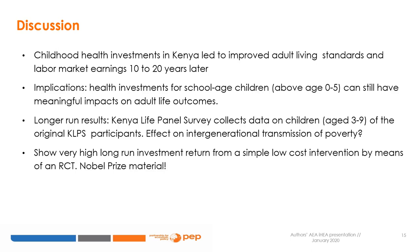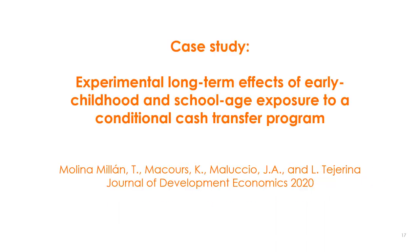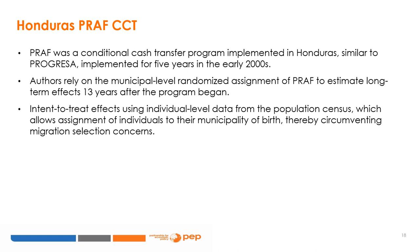We can also derive lessons for long-run RCTs from cash transfer programs. We start in Honduras with a paper called 'Experimental Long-Term Effects of Early Childhood and School-Age Exposure to a Conditional Cash Transfer Program' by Molina Milan and co-authors, published in the Journal of Development Economics in 2020. The program consisted of a conditional cash transfer program implemented in Honduras for five years in the early 2000s, modeled after PROGRESA.